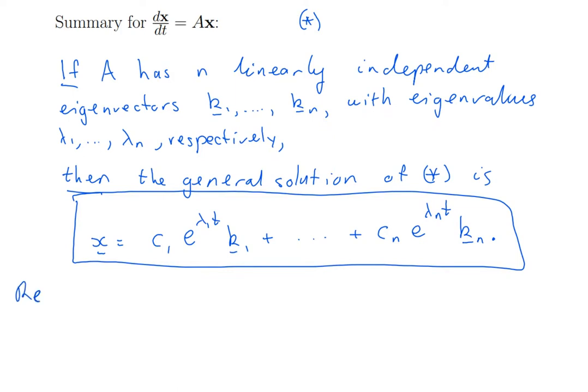So, how can you tell if a matrix has n linearly independent eigenvalues? Well, one case is easy. A has n distinct eigenvalues. That means they're all different numbers. None are repeated.